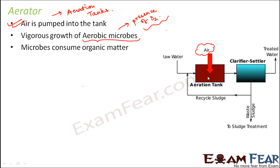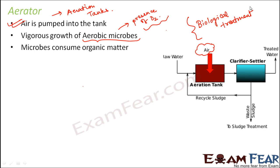The treatment is not physical treatment because we are not physically removing the organic impurities. Rather, the organic impurities are removed by the action of living organisms. That is why this type of treatment is called biological treatment — the secondary treatment involves biological treatment of the sewage.